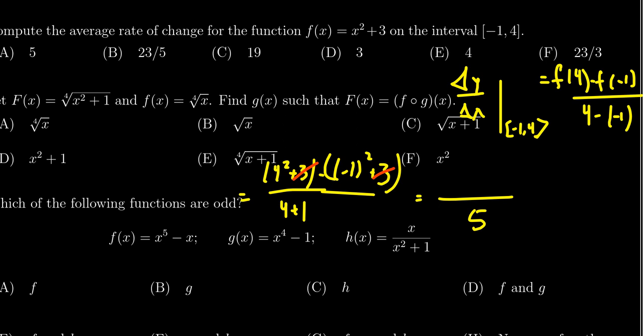In the numerator, we have 4² which is 16. Then we subtract (-1)². By order of operations, (-1)² equals positive 1. So we get 16 - 1 = 15. Divide that by 5 to get 3. Therefore, the average rate of change is choice D.